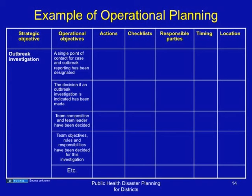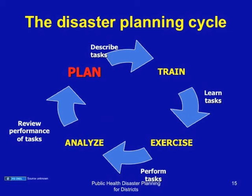The planning cycle involves: planning, in which we describe the tasks; training, in which we learn the tasks through meetings, consensus building sessions, and negotiations; exercises, in which we perform and test the tasks with respect to scenarios; analysis, in which we review performance with respect to the exercises or disasters that have occurred; and then we plan again or improve the plan.